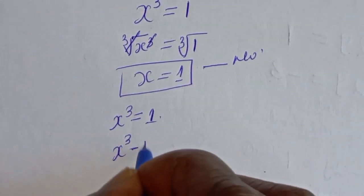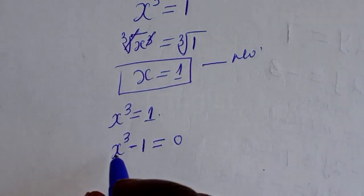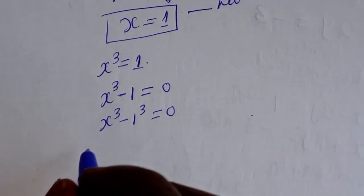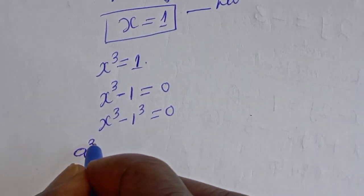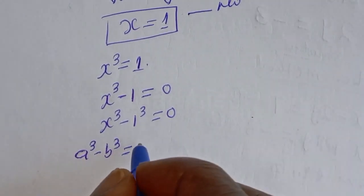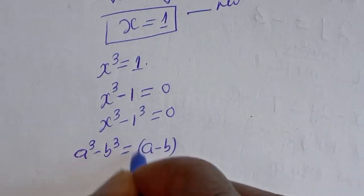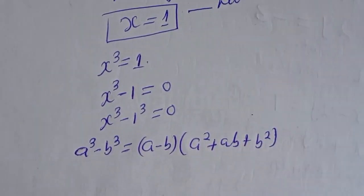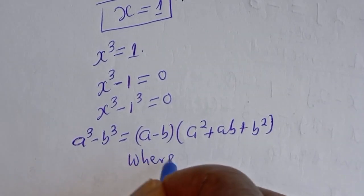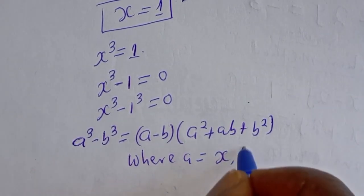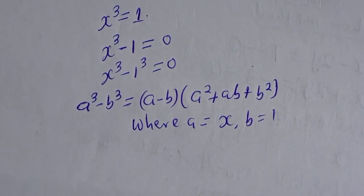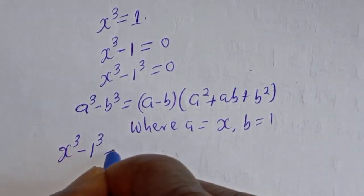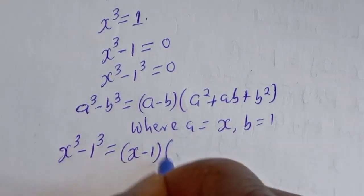Rearranging: s raised to power 3 minus 1 is equal to 0. We apply the difference of cubes identity: a³ minus b³ equals (a minus b)(a² plus ab plus b²). Here a is equal to s and b is equal to 1. Substituting: s³ minus 1³ equals (s minus 1)(s² plus s plus 1).